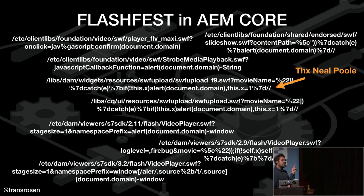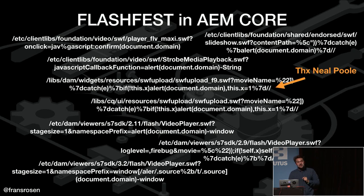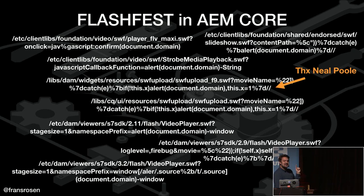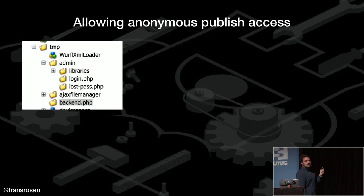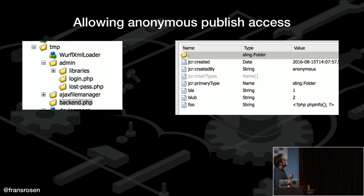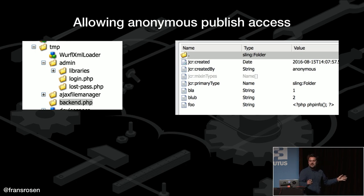What was interesting when I started looking at some of these customers was that some of them allowed anonymous access to write content. One customer I saw had already been breached. However, the person who breached it basically thought it was PHP, so they started creating PHP files inside this Java virtual machine — like PHP info. I'm thinking, you can do so much worse than trying to run PHP code. You already have write access to whatever you want on this website.